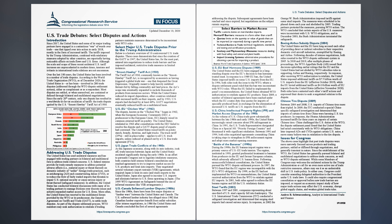Battle of the Bananas, 1990s: During the 1990s, the EU banana import regime was a primary source of U.S.-EU trade tension. The regime, instituted in 1993, granted preferential treatment to bananas from producers in the EU and former European colonies, which adversely affected U.S. banana firms. Following unsuccessful bilateral consultations, the United States pursued the WTO dispute settlement process. In 1997, the WTO found that the EU regime was incompatible with the EU's WTO obligations. By 1999, as the EU had not implemented the WTO recommendations, the United States received authorization from the WTO to retaliate against EU imports. In 2001, both sides agreed to reform the EU banana regime and lift the U.S. retaliatory duties.